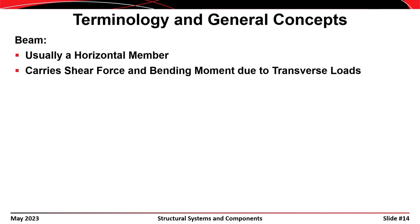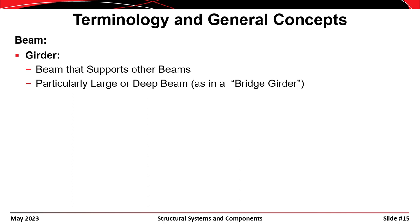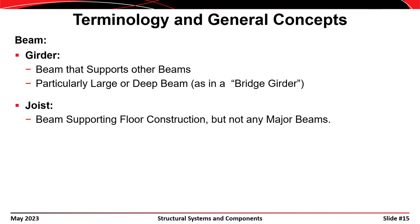Now we talk about the definition of a beam. Beams are usually horizontal members, and they always carry shear force and bending moments due to transverse loads. There are a lot of different kinds of beams. A girder is a beam that supports other beams. In a bridge, a beam that is particularly deep or large might also be considered a girder. A joist is a beam that usually frames into other beams or into a column and supports the floor system or floor decking of a building.